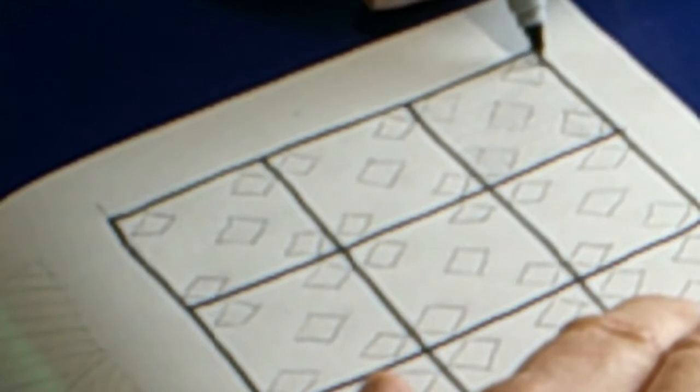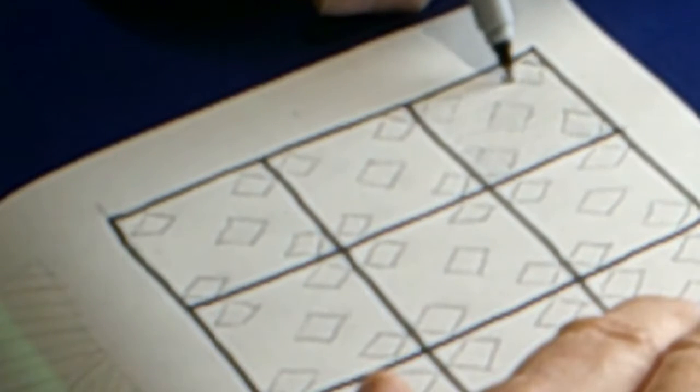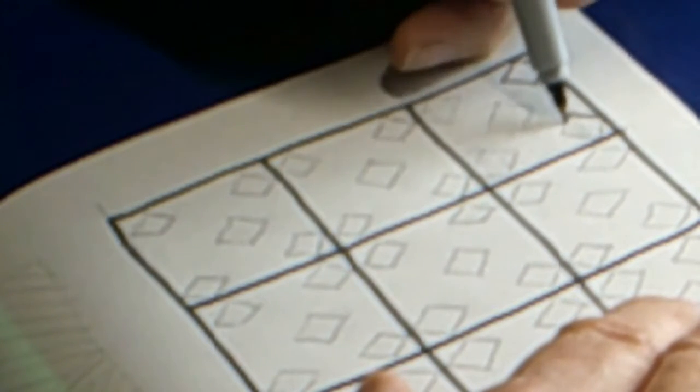We're going to begin by drawing some diamond shapes, five diamond shapes within our square. Draw one that's in each corner.